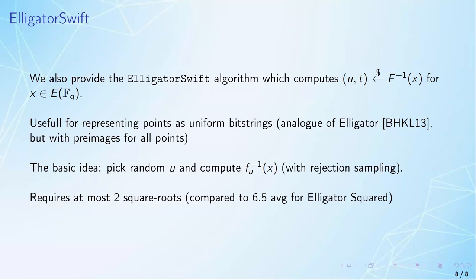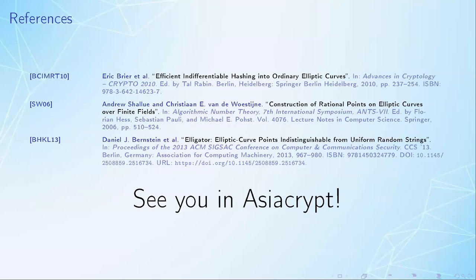You can actually reject by doing quadratic reciprocity tests before committing to any actual square root computations. So in the end, you always do at most two square roots, which is a big improvement over the previous Elligator Squared variant. That is a short summary of our work, and if you want to hear more about the details, we look forward to seeing you in AsiacCrypt. Thank you.